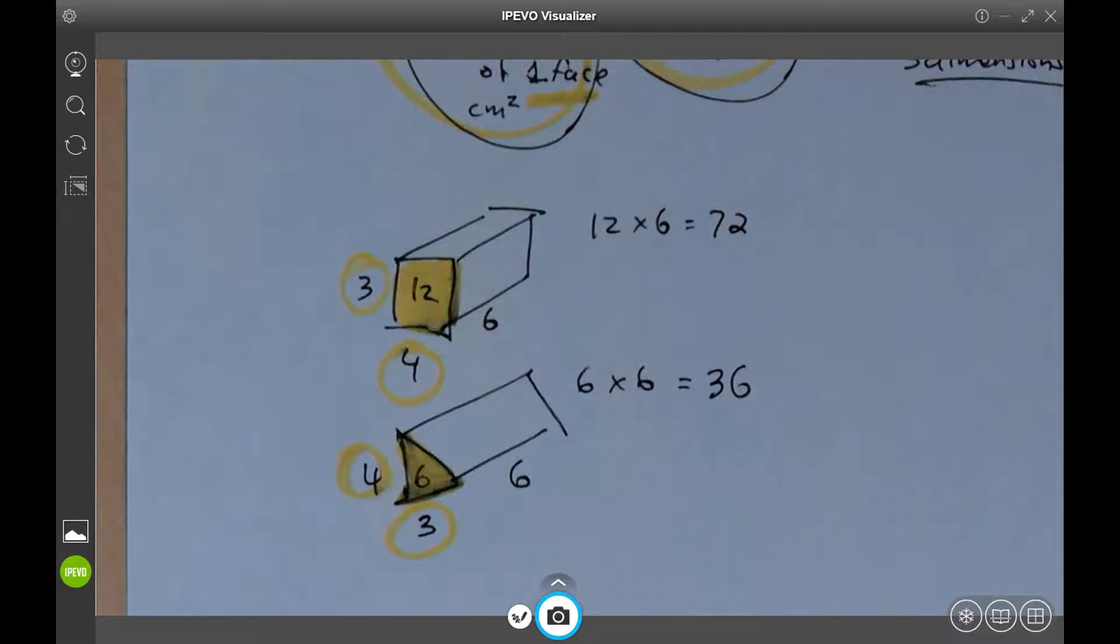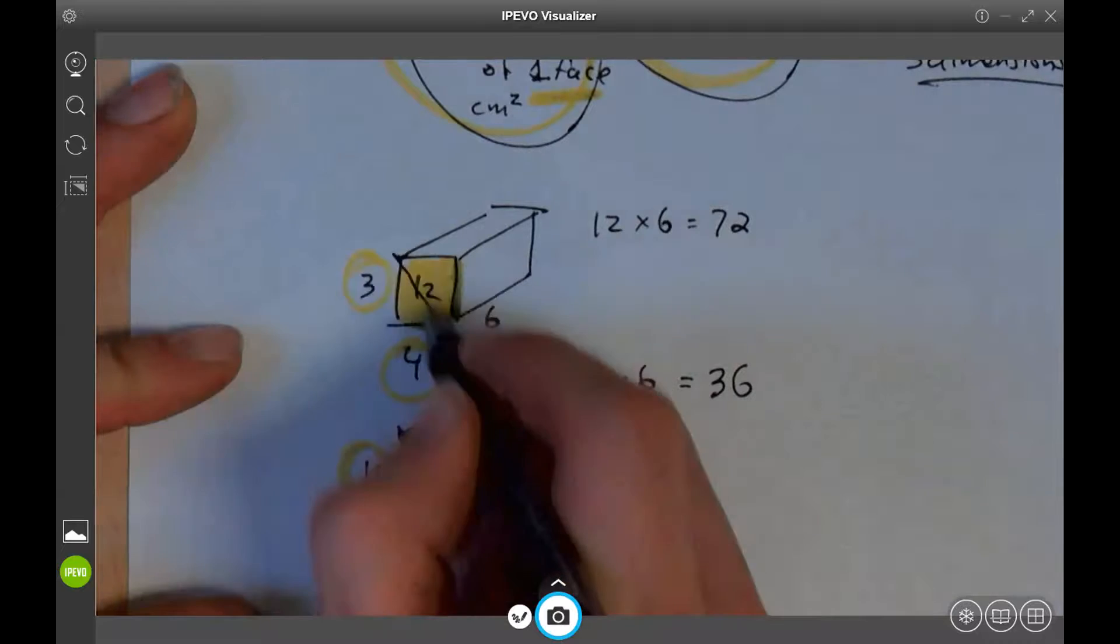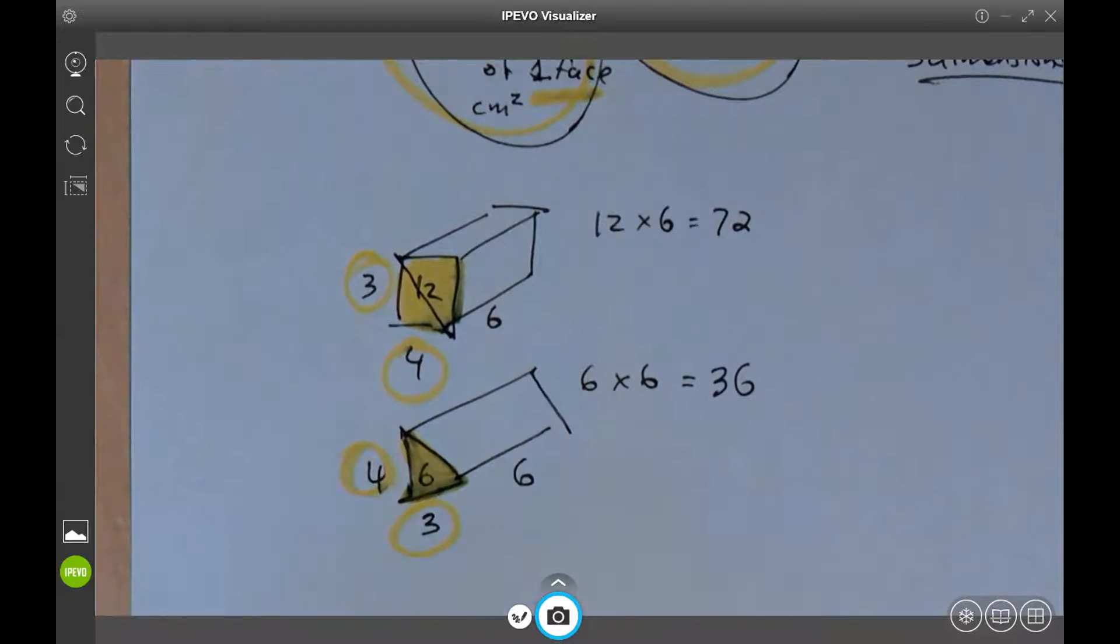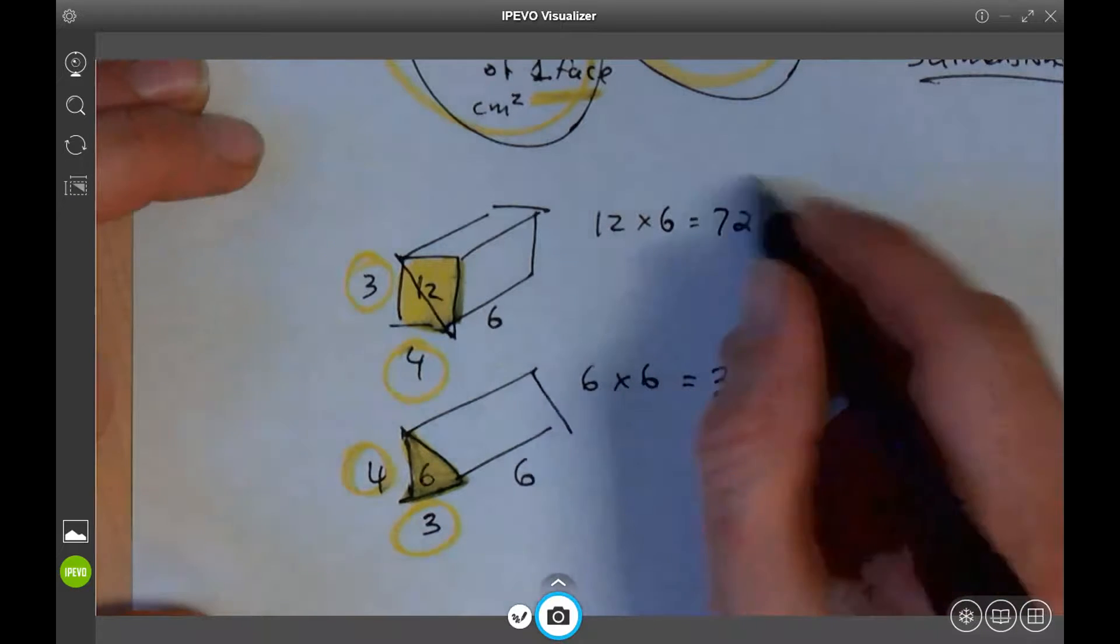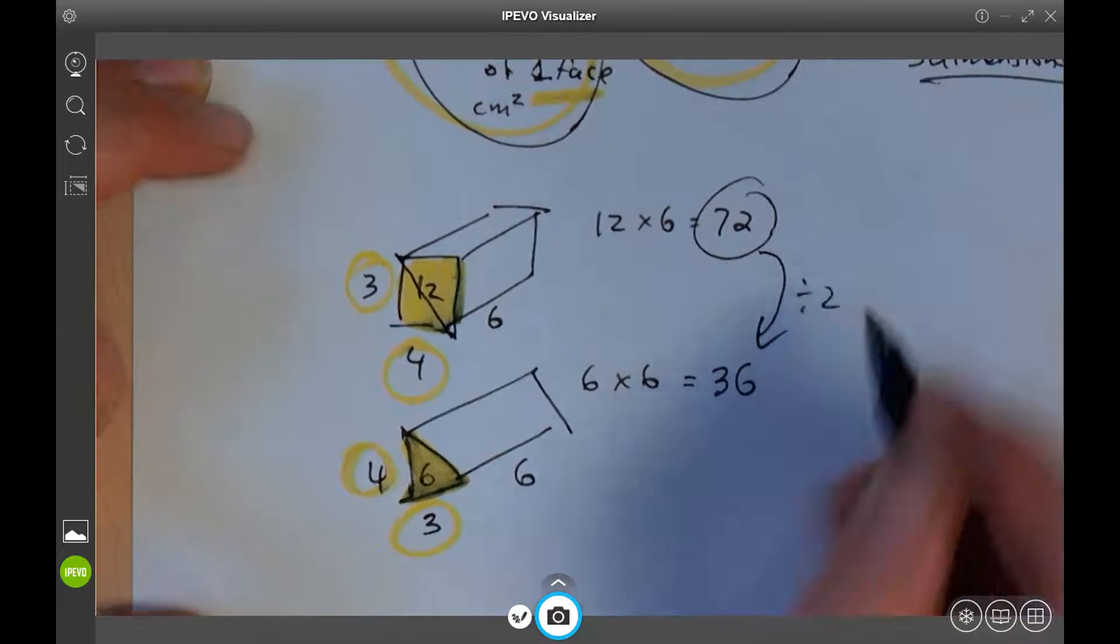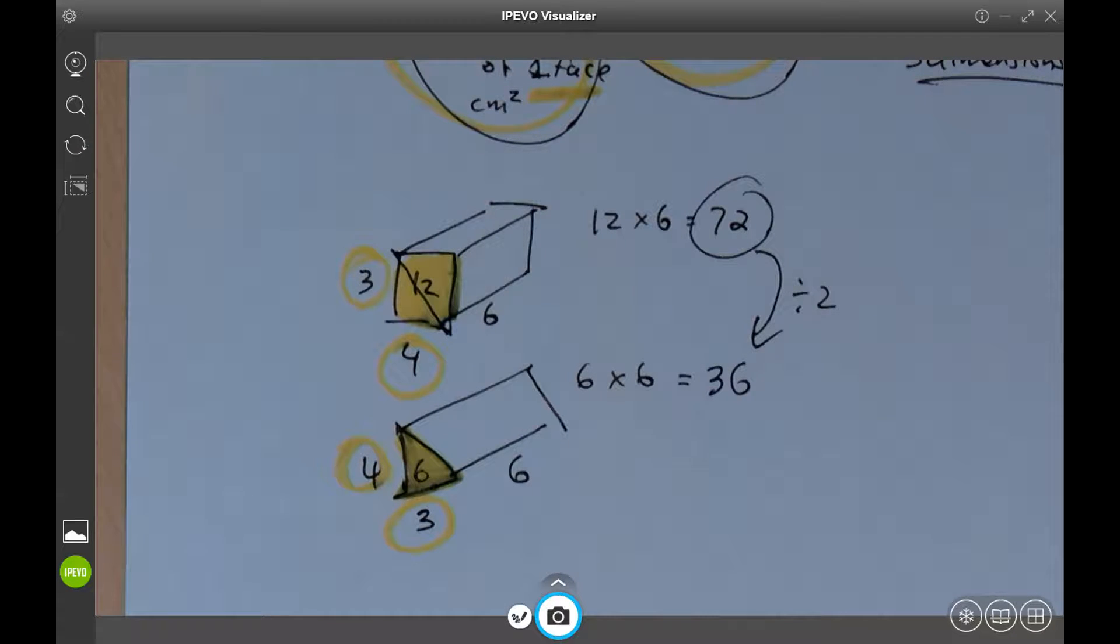If you think about it, that makes sense. Because a triangular prism, if it has the same dimensions as this, is exactly half of the volume. I just cut this in half, chopped it straight down the middle, it's going to have exactly half of the volume. And if you divide 72 by 2, you will get 36. How else does this help us?